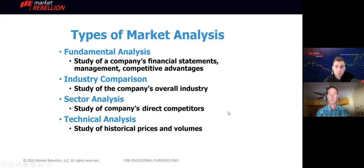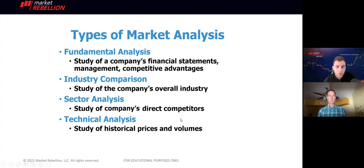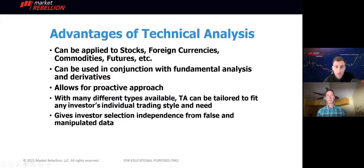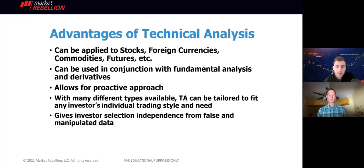There are four primary types of analysis. You have fundamental, which is typically a company's financial statements. In Bitcoin or cryptocurrencies, this could be considered on-chain volume or metrics like that. We have industry comparison and sector analysis. And then of course we have technical analysis, which is the study of historical prices and volumes. It can be used in conjunction with fundamental analysis as well as some derivatives.